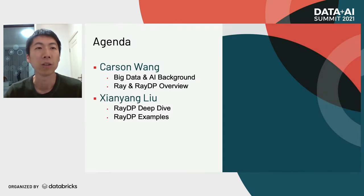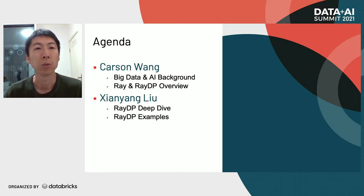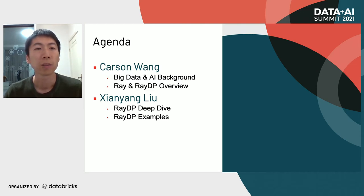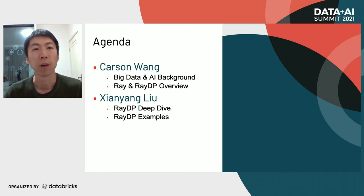This is today's agenda. I will first talk about the background and how people are integrating big data with AI and what are the challenges we are facing. Next, I will introduce Ray and RayDP projects and how we can build an end-to-end pipeline with these projects more easily and efficiently. Next, Xinyang will talk about the RayDP API and the architecture design. And finally, he will also show you some examples.